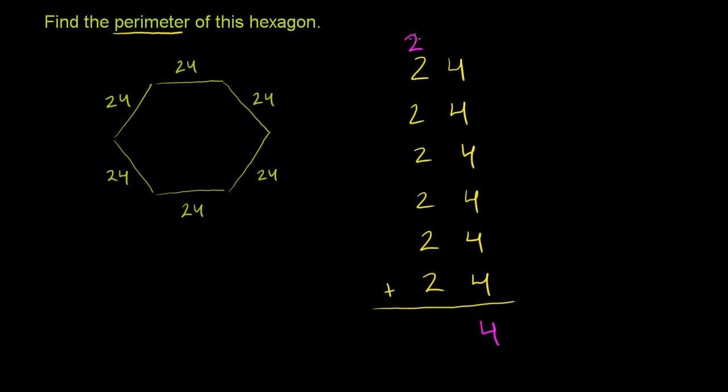And now we're in the tens place. 2 plus 2 plus 2 is 4 plus 2 is 6 plus 2 is 8 plus 2 is 10 plus 2 is 12 plus 2 is 14. So the sum of these six 24s is 144.